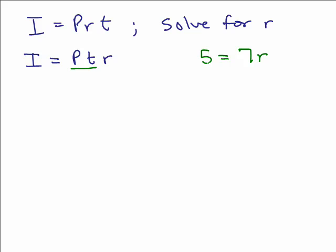Now what I'm doing over on the right, like I did in the previous example, is if you're not sure how to get started, you could think about having numbers in for all those other variables. So you would keep the r and then see, how would I figure out this problem? And you would do this by dividing by 7, but in this case, there isn't a 7, there's a P, T being multiplied by r. So we want to divide both sides by P, T.